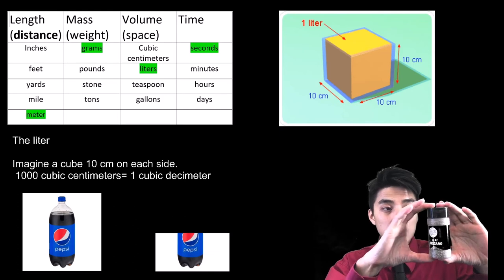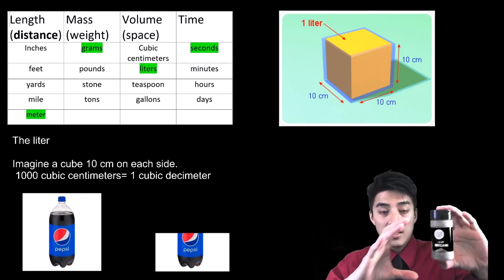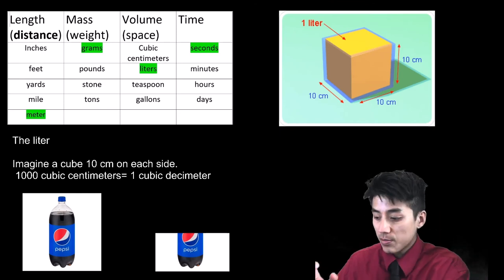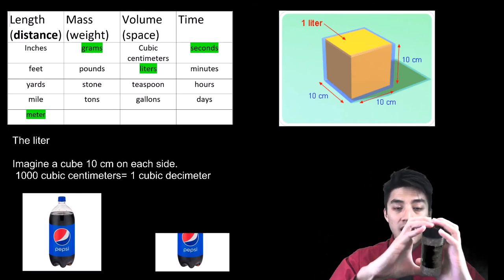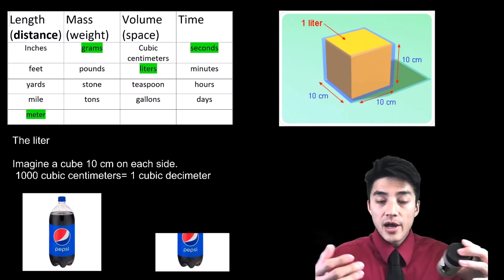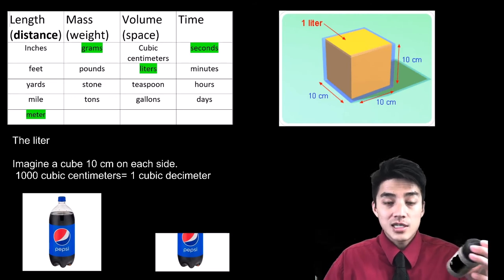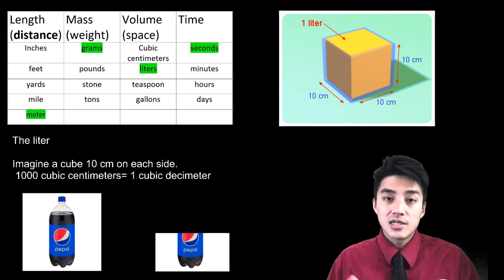So imagine you have a cube that's 10 centimeters, length, width, and then height. Okay, so imagine a cube that's about this big around the oregano. Okay, that's roughly 1 liter. Or to give you a better visual, imagine a 2 liter Pepsi or a 2 liter Coke sitting in your fridge right now. Just cut it in half, that's roughly the size of 1 liter.